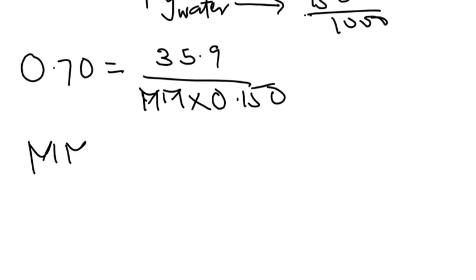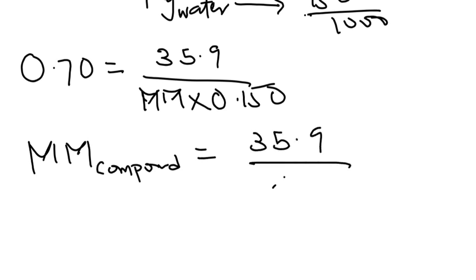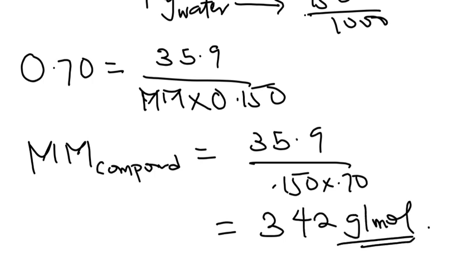And the molar mass of the compound will be 35.9 divided by 0.150 times 0.70, and this will give you 342 grams per mole.